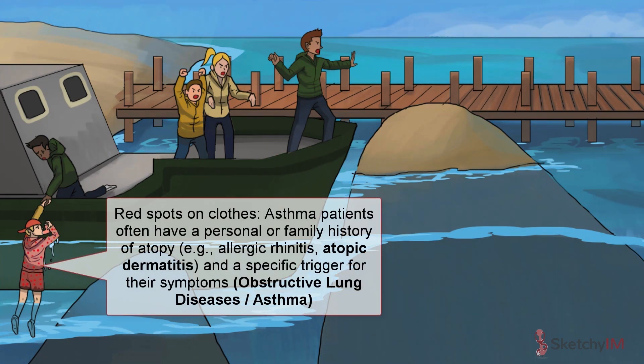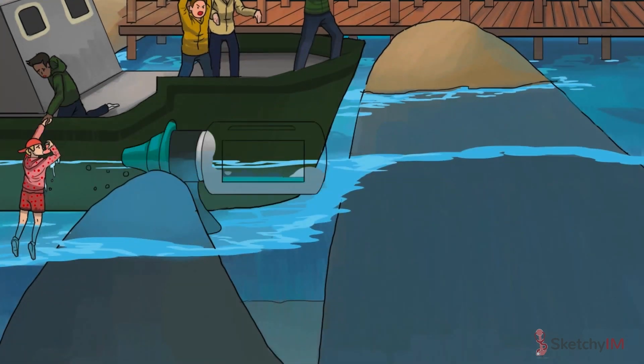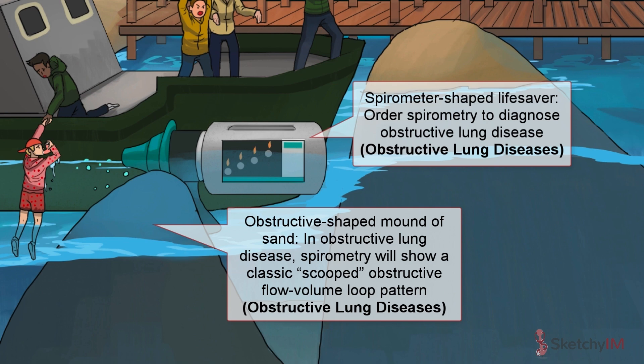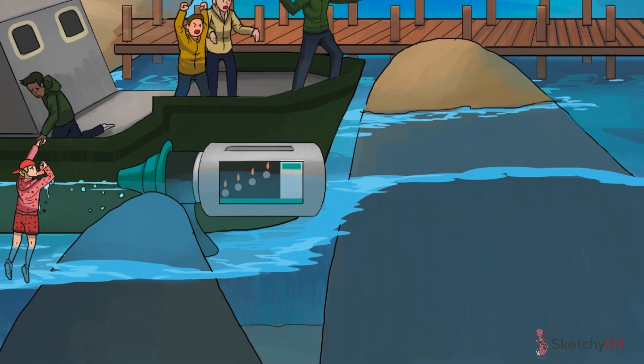Consider asthma in your patient with chronic dyspnea, especially if they have a history of atopy, such as atopic dermatitis, represented by those red spots on his clothes, and a specific trigger for their symptoms. If you suspect your patient has an obstructive lung disease like asthma, order spirometry testing, which should show a classic obstructive flow volume loop pattern, represented by that scooped mound of sand hiding underneath the surface of the water. One thing to remember about asthma is that because it's characterized by reversible airflow obstruction, spirometry results may look normal when patients aren't having symptoms. In these cases, we have other tests that can help us make the diagnosis, which we'll talk about in a moment.